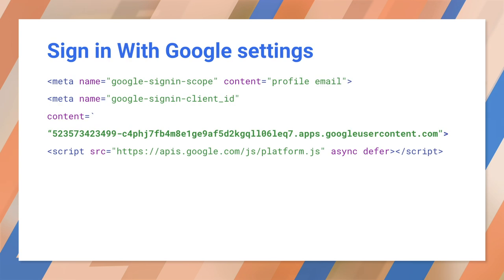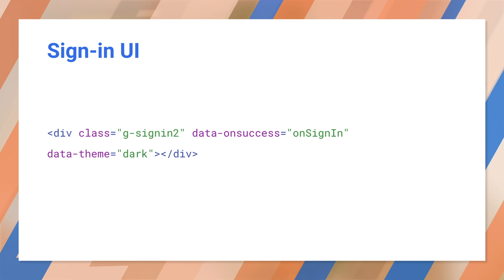I've already registered a demo app. The first meta tag sets some options, and the second has my app identifier. Then I load the library using async and defer for a fast time to render. One line of HTML adds the button — Google's library looks for a specific CSS class and injects the button. Notice the attributes with the data prefix; these let you attach arbitrary data to a DOM node.